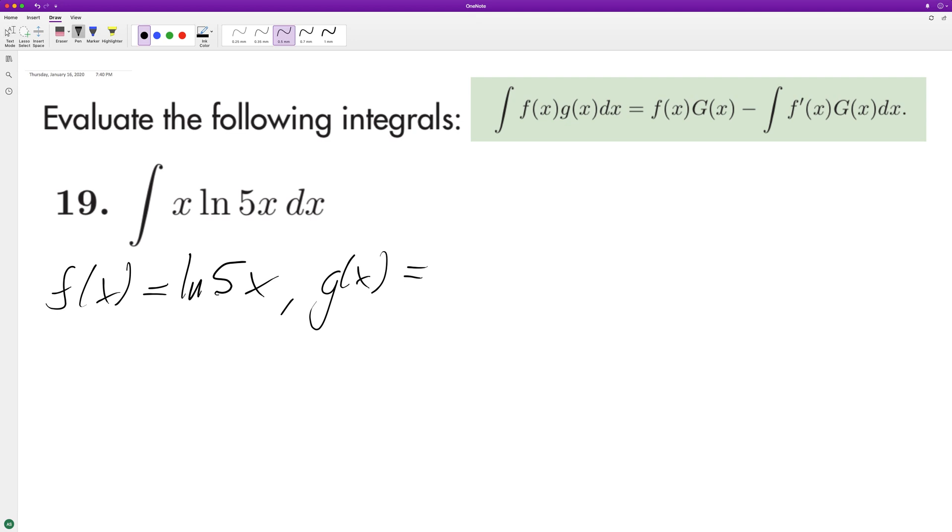Then f'(x) is going to be equal to 5 times 1 over 5x. The 5s cancel, so we're just left with 1 over x. And g(x), which is the integral of g'(x), is going to be x squared over 2.